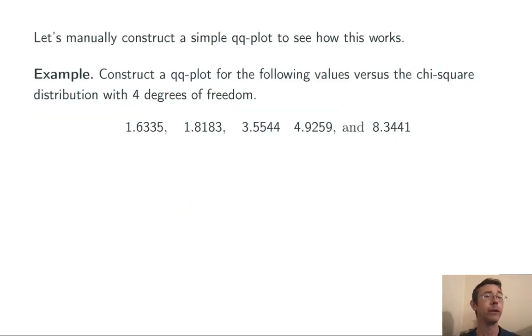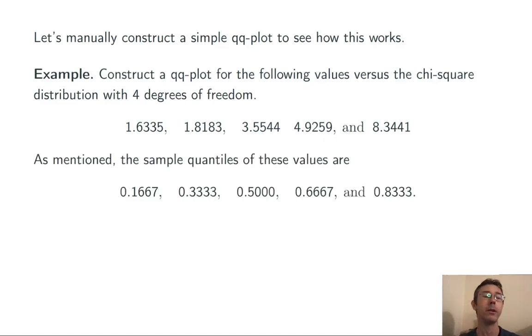Let's work through a really simple example to see how this works, and then look at a few actual quantile quantile plots to determine how to interpret them. Here's 5 values, and we'd like to know whether or not they could plausibly come from a chi-squared distribution with 4 degrees of freedom. I've already ordered them from low to high, and on the previous slide, we already determined that the sample quantiles for these values are 1/6, 2/6, 3/6, 4/6, and 5/6.